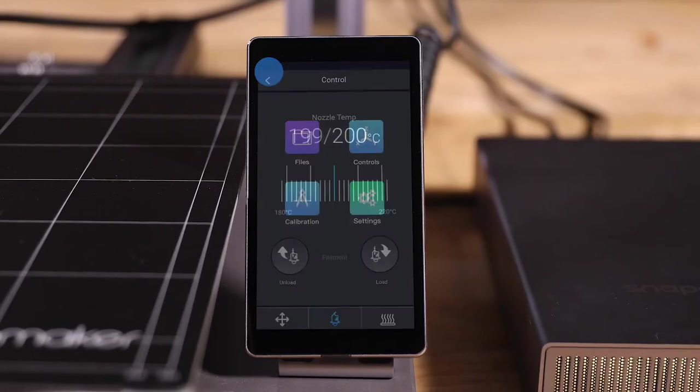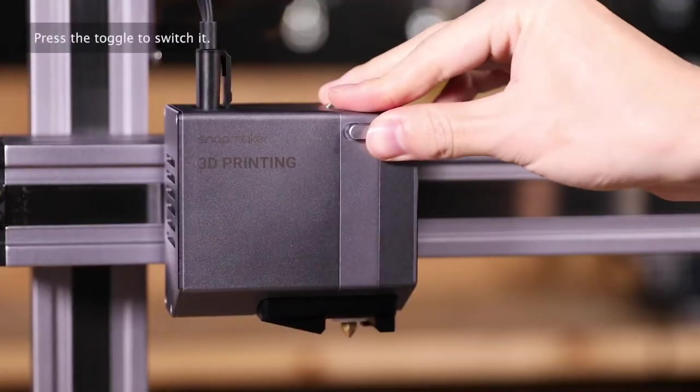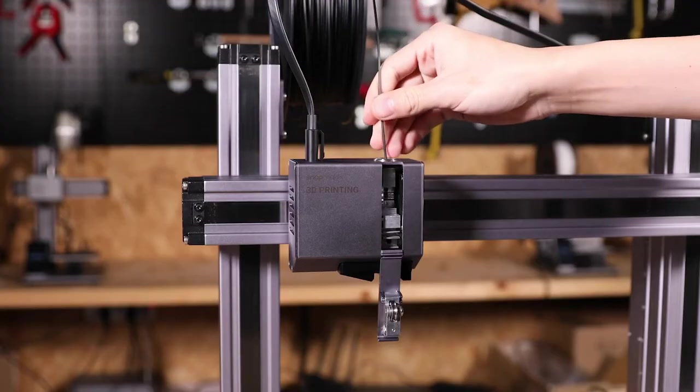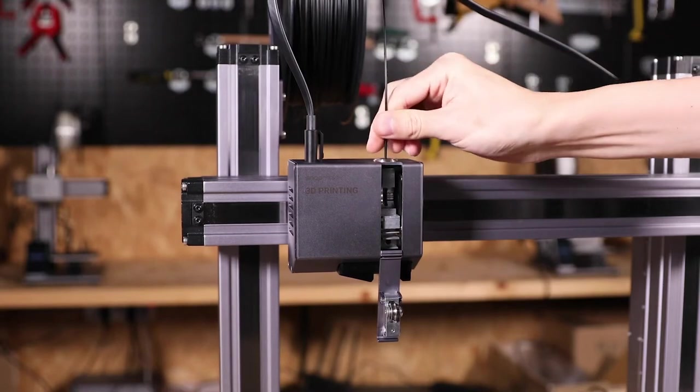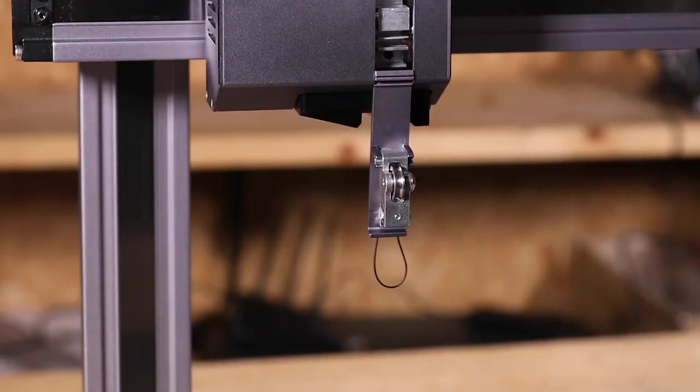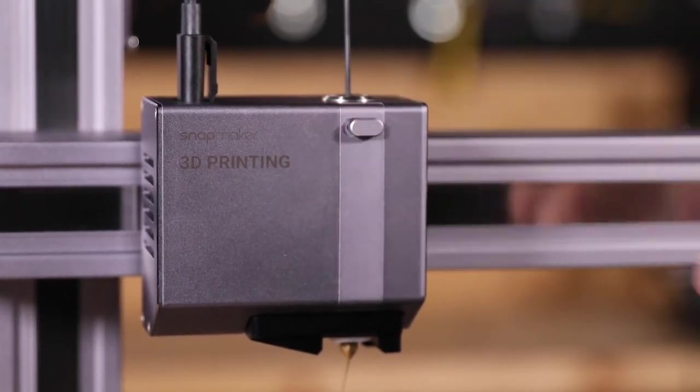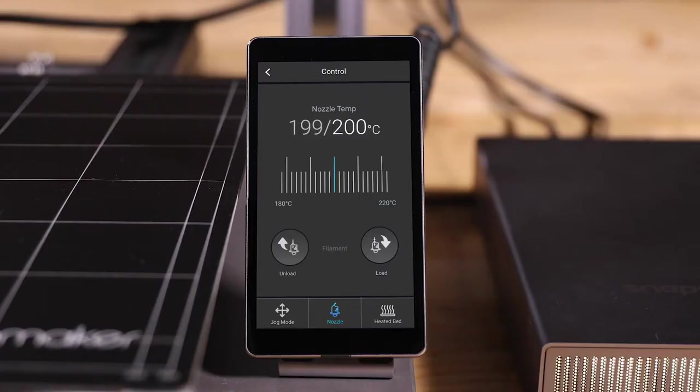Clean the nozzle with the tweezer, then return to the home page. Or you can open the front cover of the 3D printing module. Direct the filament at the feed hole and push it in manually until you see the filament coming out. At last, close the front cover. Clean the nozzle and return to the home page.